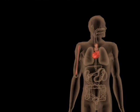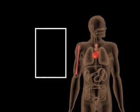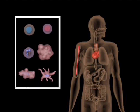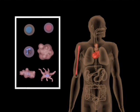The principal cells are lymphocytes, neutrophils, macrophages, and dendritic cells, all of which originate in the bone marrow.